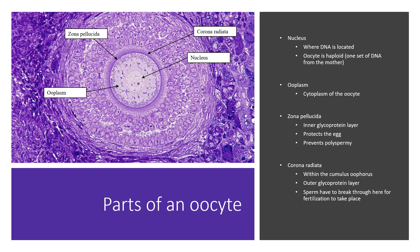Let's look at parts of an oocyte to begin with. An oocyte and an ovum are not necessarily the same thing — an oocyte is an immature egg, and an ovum is a mature egg. You'll see me switch between them as we get further through. An oocyte has a nucleus where the DNA is located. An oocyte is haploid, so it hasn't been fertilized yet and only has one set of DNA from the mother. You also have the ooplasm, which is just the cytoplasm of the oocyte.